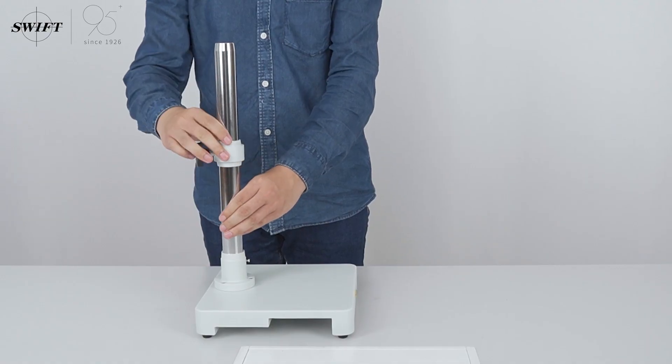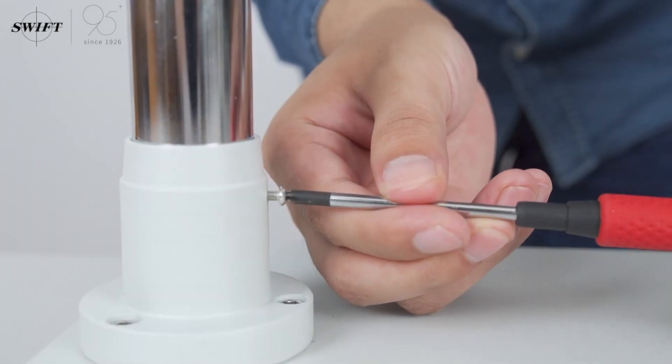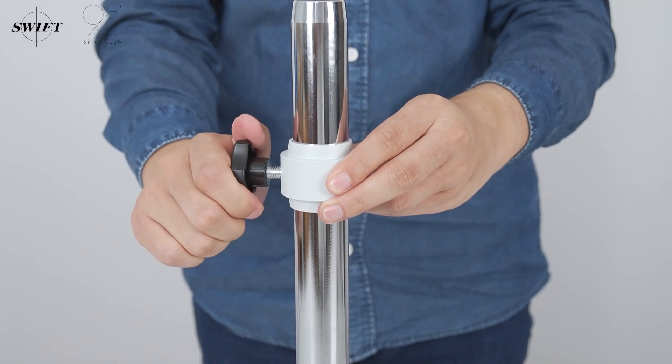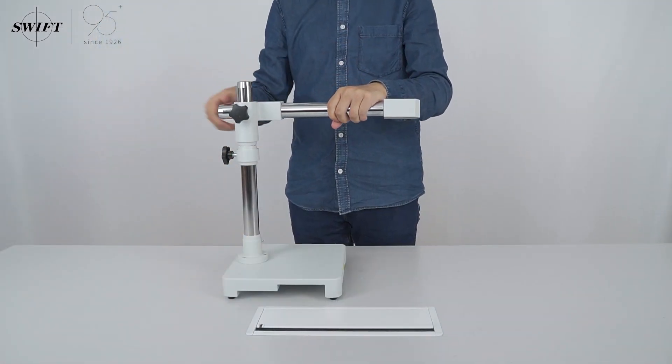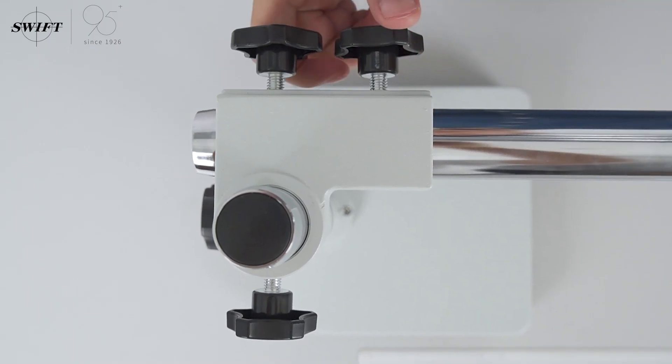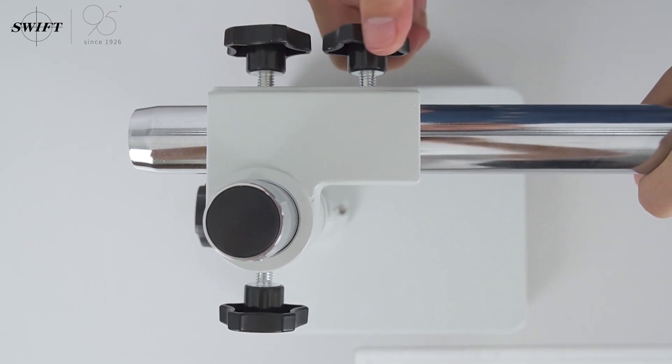First, screw the vertical column into the base and tighten it with screws. Adjust the safety support frame to a suitable height and tighten it. Insert the hole at one end of the horizontal column into the vertical column and tighten the column locking knob. Adjust the position of the horizontal column extension or retraction for convenient observation.